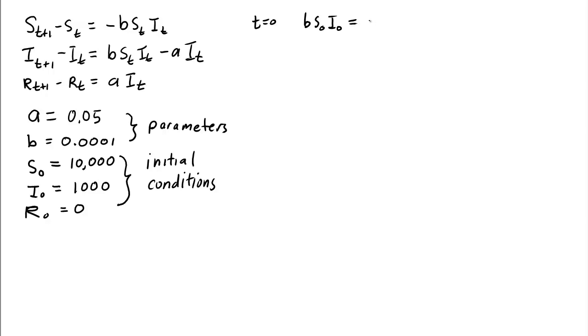Well that's going to be B, which is 0.0001, times S0, which is 10,000, times I0, which is 1,000. And when you calculate that out, it turns out that is 1,000. So this means 1,000 new individuals get infected from time 0 to time 1.